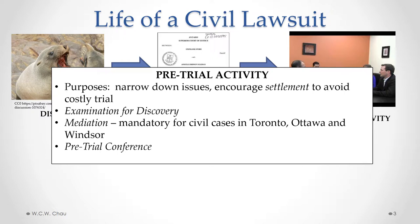The final step before actually going to trial is something called a pretrial conference. A pretrial conference involves the two parties and their lawyers meeting with a judge — not the judge that will hear the trial, but a real judge of that court. The judge will be apprised of the evidence obtained through discovery and will provide his or her opinion about the strengths and weaknesses of each party's case, and could push the parties towards settlement in order to avoid trial.